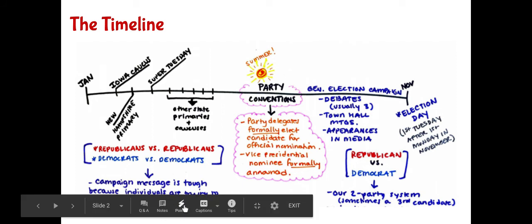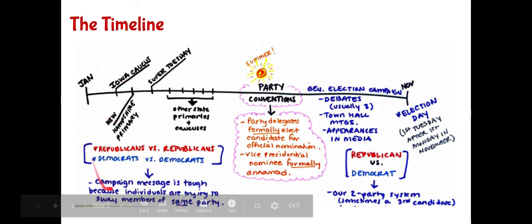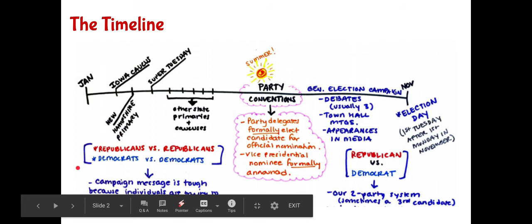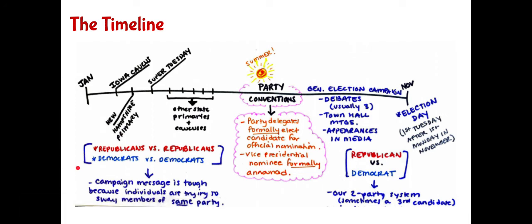The primary phase is difficult because one has to convince individuals of their own party that they are the right person for president. When you're a Democrat running against other Democrats, it's really difficult to distinguish yourself as unique and right for the party — same thing for Republicans. Then we have Super Tuesday, where maybe 15 to 30 different states, depending on the year, can have their contests. After that day, if you're not winning or coming in the top three, you're probably going to drop out of the race.